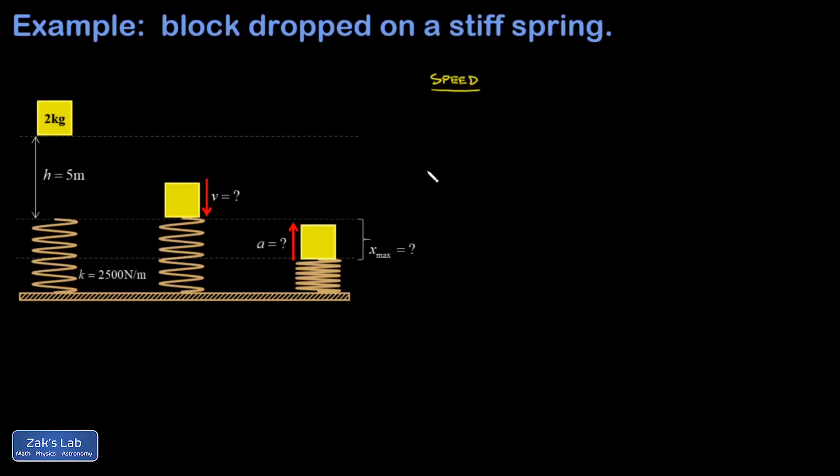Let's get started with the speed question. I'm going to write down energy conservation, but I have to have a reference point for my potential energy. So what I'm going to do in this case is put y equals zero right here at the tip of the uncompressed spring, and that means I had y equals five up here. It also means that when I get deeper into the problem, I'm going to have to use a negative y down here.